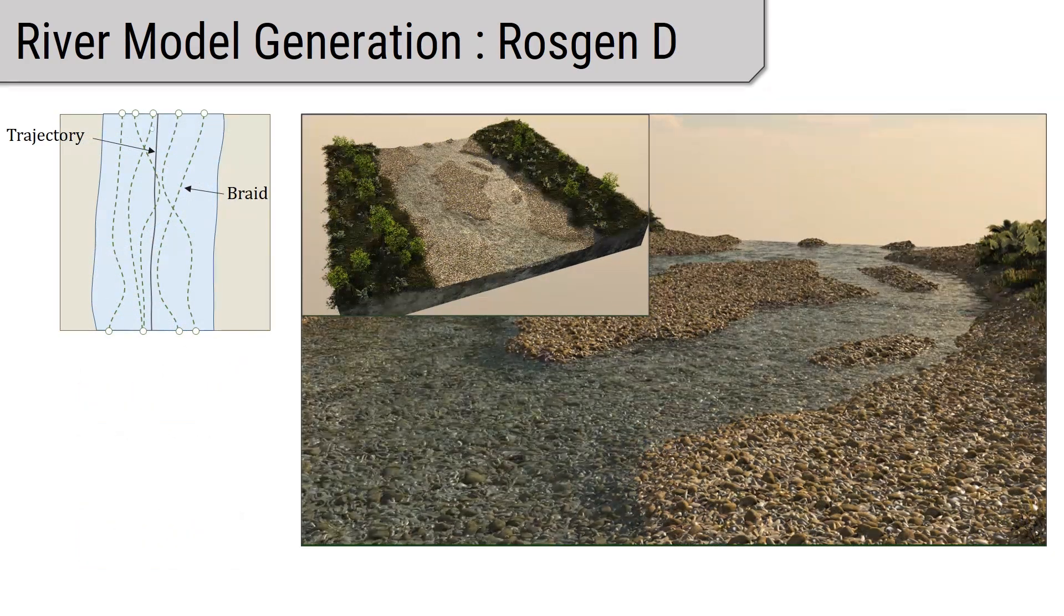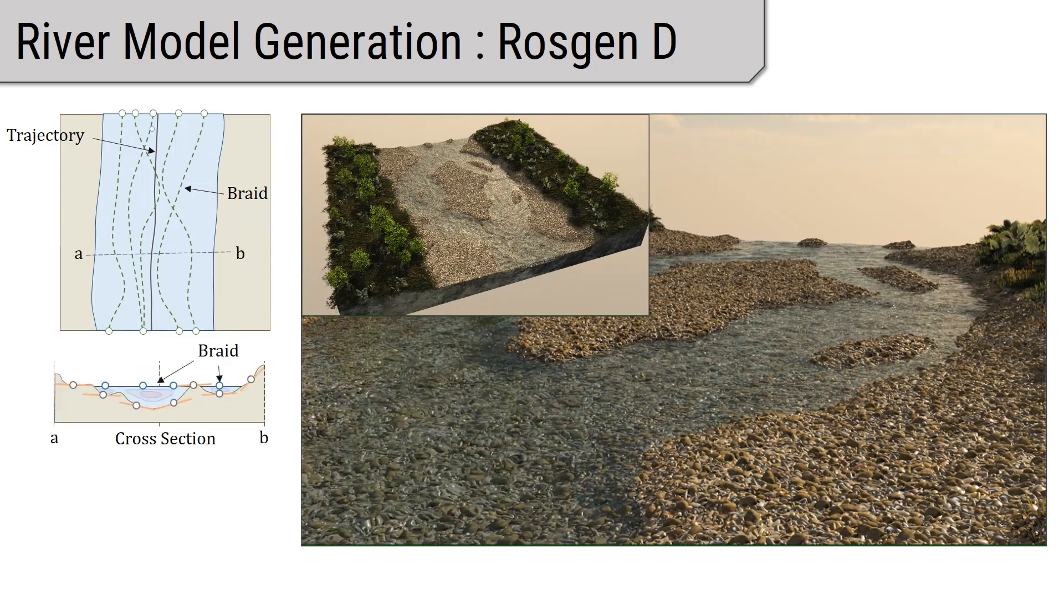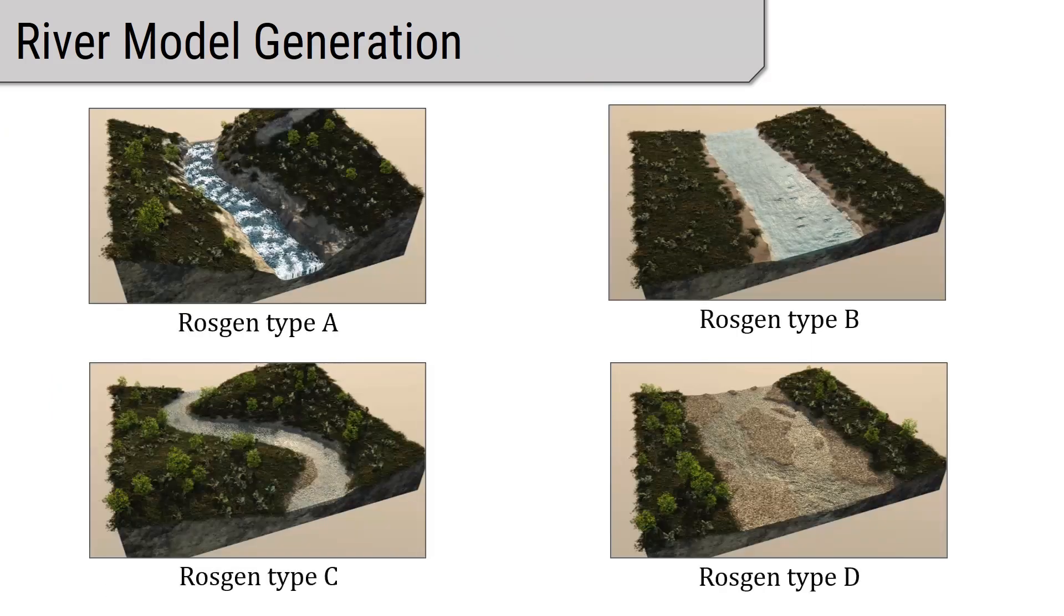Rosjan type D typifies wide rivers with little slope. This often leads to riverbeds with several channels of varying width and depth.